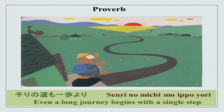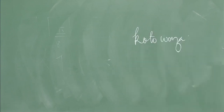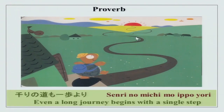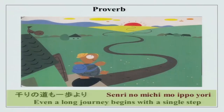As last time, we started proverbs — kotowaza in Japanese. You can see this Kame-san and a very long road. Even a long journey begins with a single step — Senri no michi mo ippo yori. Sen is thousand, ri is the measurement, michi is road, mo ippo yori — you have to take the first step even for a very long journey. Our journey of learning Japanese has already begun and we will do lots more.